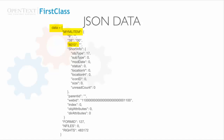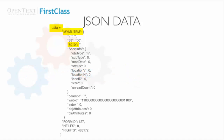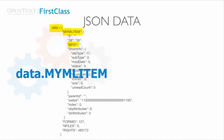If the key value is a string that would evaluate to an integer, we can't use dot notation. For example, to retrieve the value of the 8010 key, we can't use data.mymlitem.8010, as this would give a syntax error. If the key value is what I call a numeric string, you have to use the associative array format instead of dot notation. So in this case, we could do a combination of dot notation at the beginning followed by the associative array format — data.mymlitem, and then enclose that numeric key value in quotes between brackets.